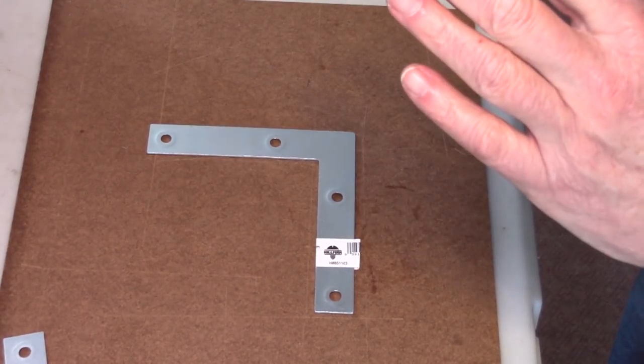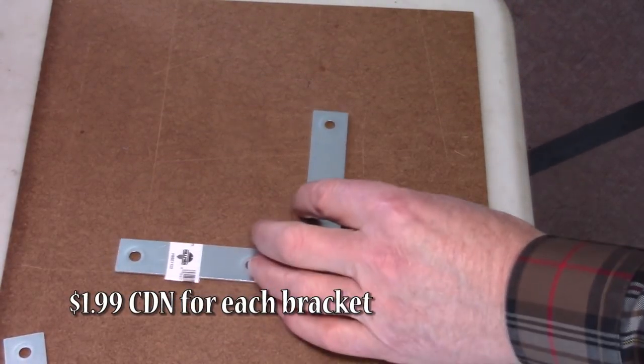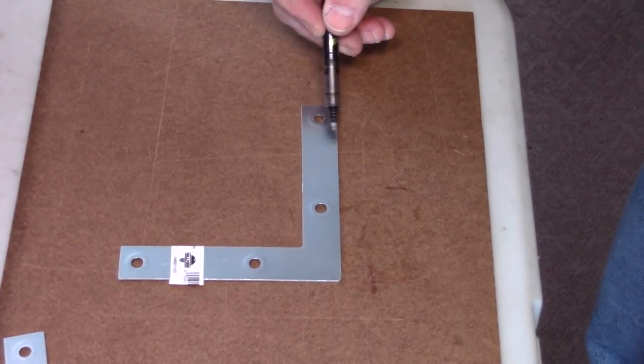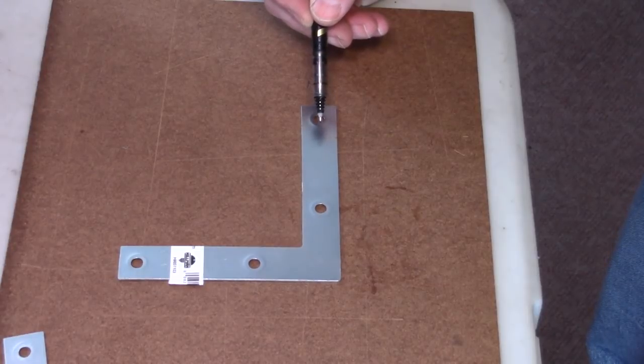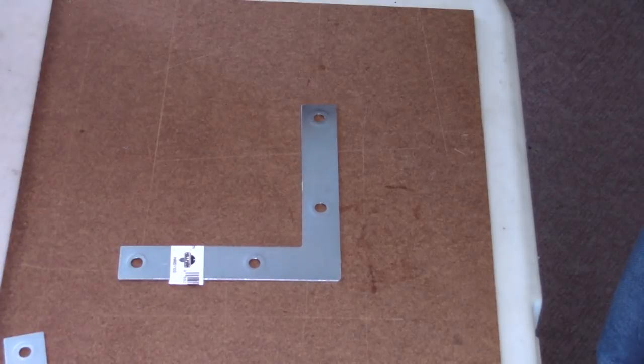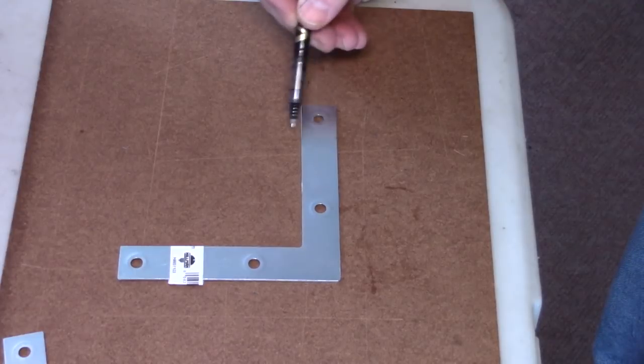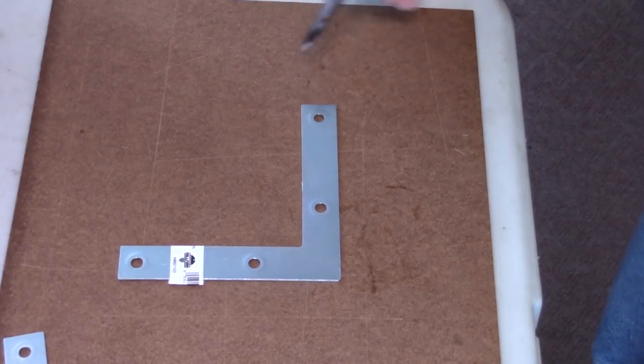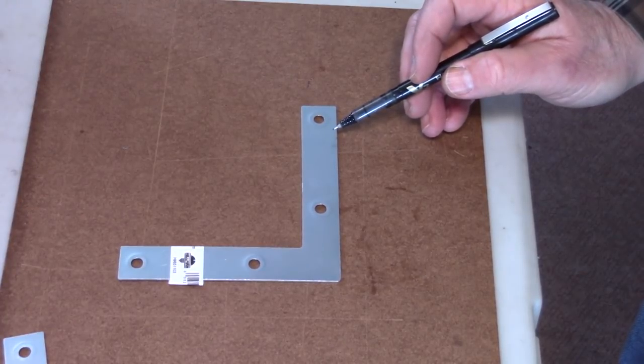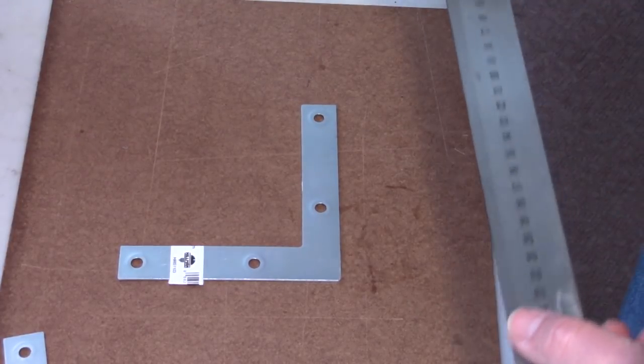Okay the first step in creating each leg of the trivet is to take one of the right angle brackets and mark a line across one leg of it and that line is going to be where we fold it at the 60 degree angle by tapping it with a hammer while it's in the vise. So we have to make sure that we put a mark directly square across the end of the leg. The distance from the tip inwards is not all that important. What is important is that it's exactly the same on all three of these right angle brackets.